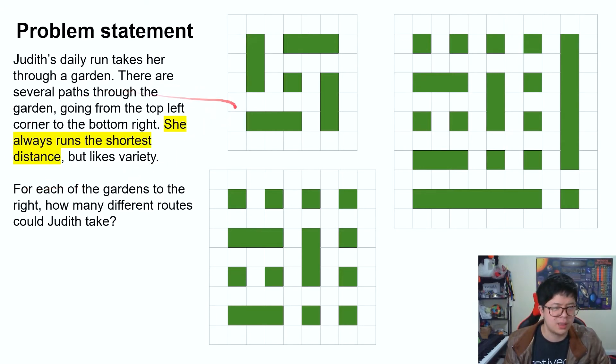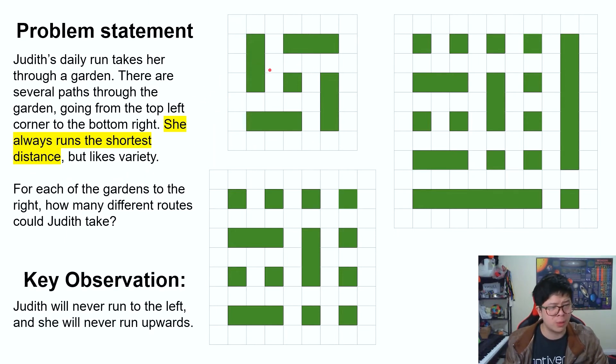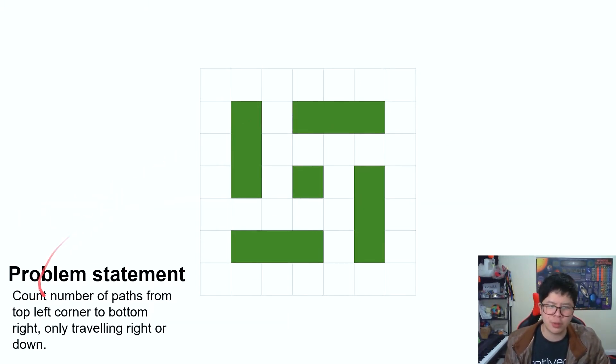The thing we should probably notice is this sentence right here, because if you play around with this problem for a minute or two, and while considering this fact, you'll soon realize that Judith will never run to the left, and she will never run upwards. So essentially our problem becomes counting the number of paths from the top left corner to the bottom right, only traveling right or down.